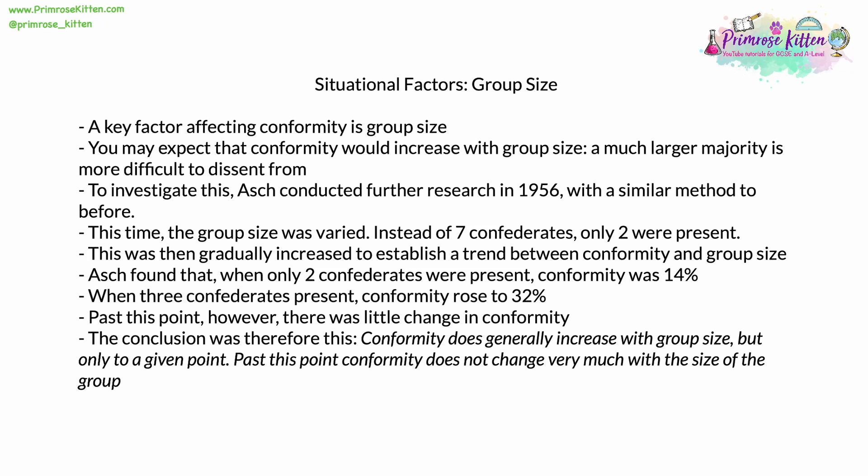Asch found that with only two confederates, conformity was 14% — still present but quite low. When three confederates were present, conformity rose to 32%, more than doubling. Past this point, however, there was little further change in conformity as group size increased. The conclusion was that conformity generally increases with the size of the wider social group, but only up to a given point, after which group size has little additional effect.